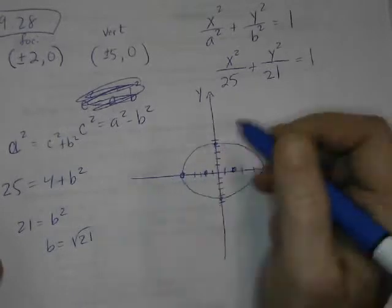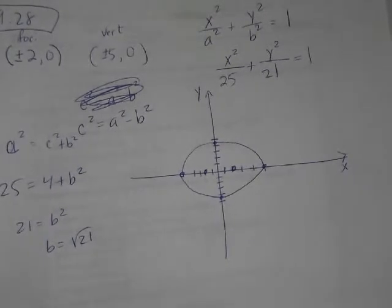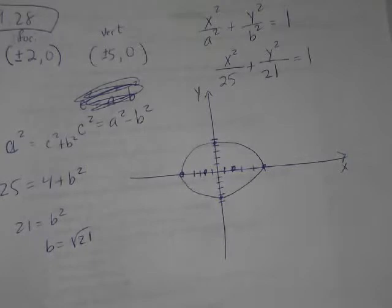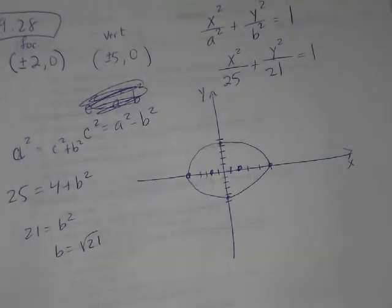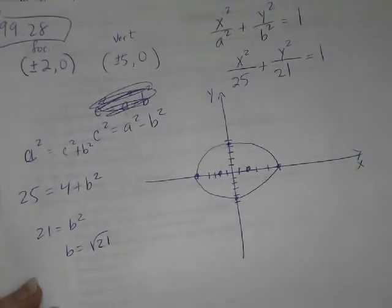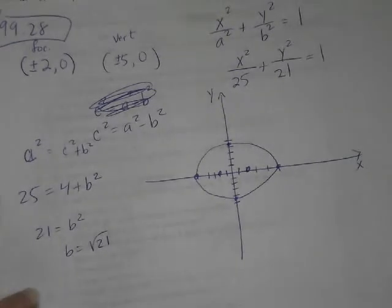And then what else? Is that all we had to do, or it probably wants more. What else does it want? It wants to know, write it and graph it. That's all it wants. Yay. So there's my equation, and there's my graph, and that's all we want.